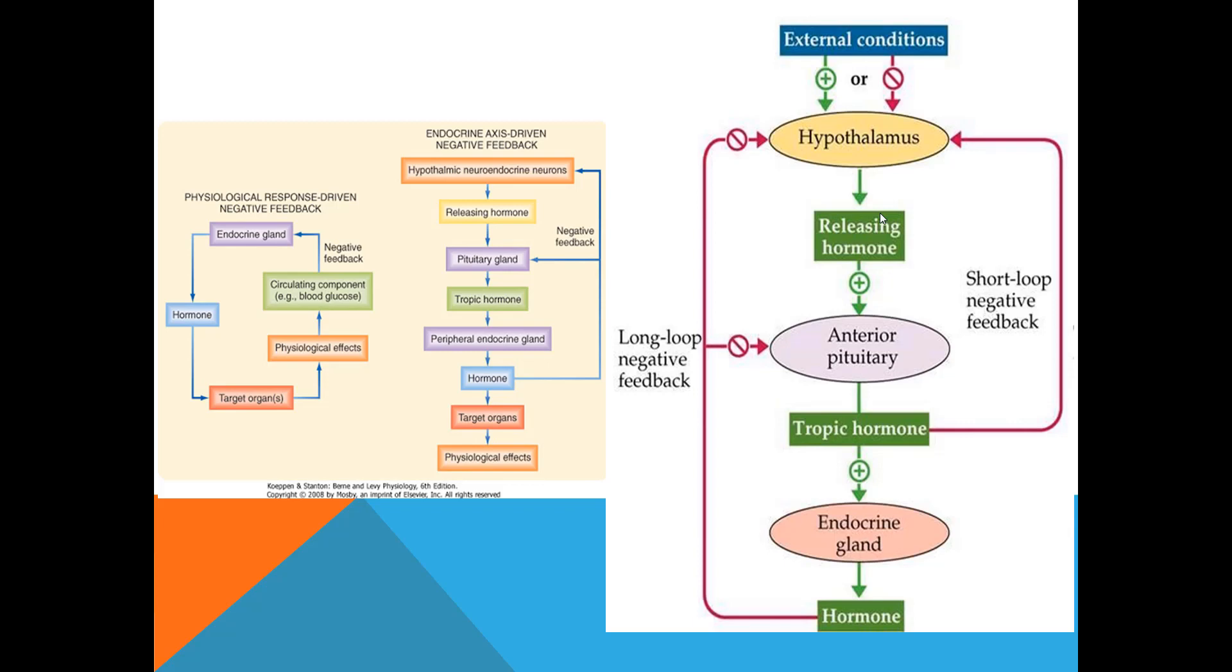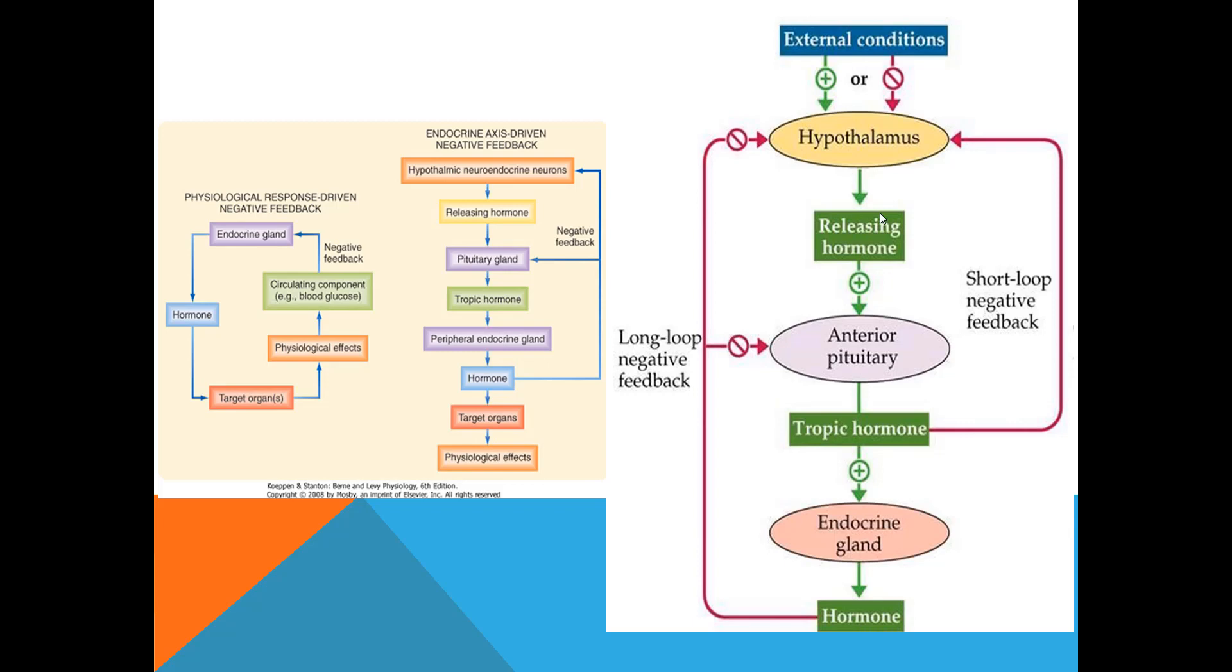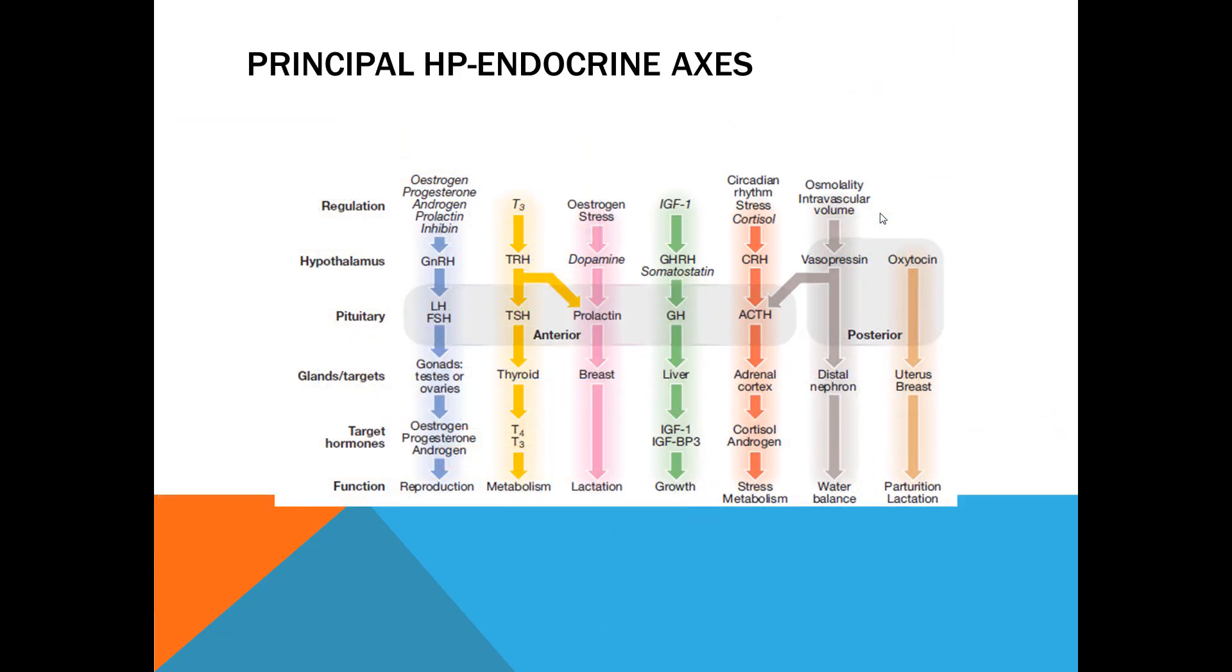Then feedback—you can see long loop feedback and short loop feedback. It's very obvious. Short loop is when tropic hormone influences its own release acting on hypothalamus. And long loop feedback is when endocrine gland hormone, the third hormone, the third level, is acting back on the hypothalamus. First level is hypothalamus, second level is pituitary, and third level is endocrine gland.